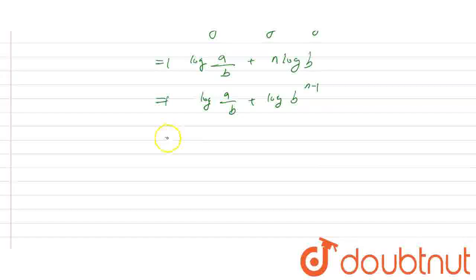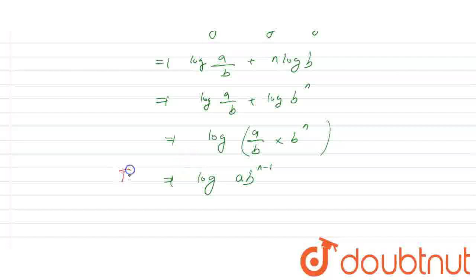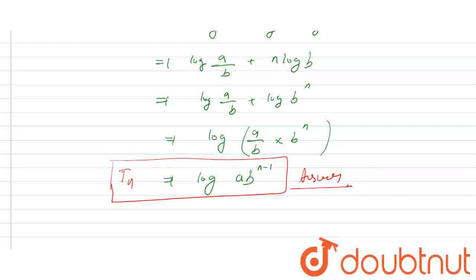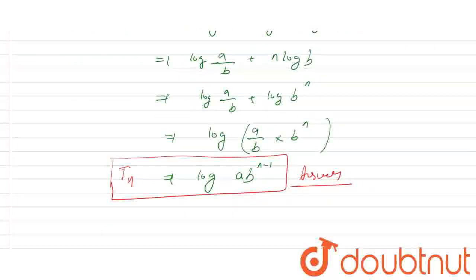Using log(m) + log(n) = log(mn), this is log((a/b)·b^n) = log(a·b^(n−1)). So the nth term is log(a·b^(n−1)). The common differences are all equal to log(b), so the sequence is in AP. Tn = log(ab^(n−1)), and this is our answer for this question. This is what we had to show and find. Thank you.